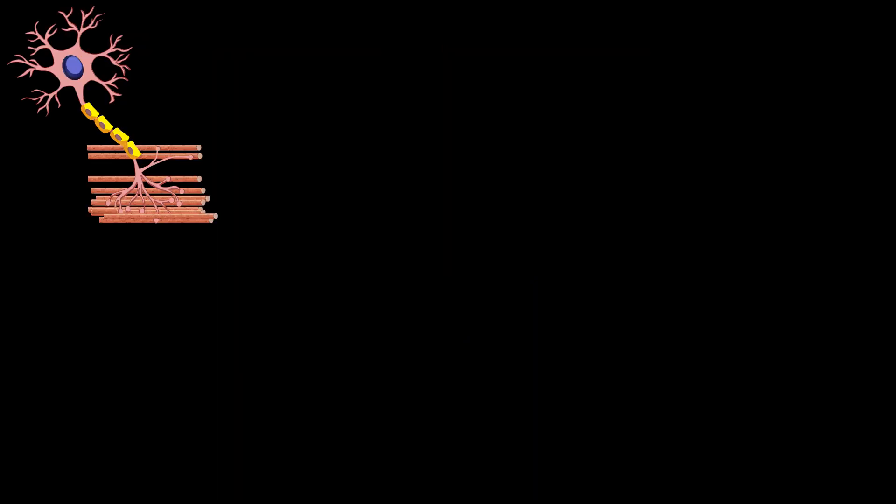This cartoon represents an anatomical motor unit. The electrical activation of an anatomical motor unit produces a motor unit potential. The amplitude of a motor unit potential depends on the action potential of the muscle fibers passing closest to the recording surface of the electrode. The duration is dictated by the width of the end plate zone contributing to the motor unit action potential.